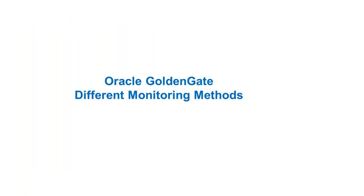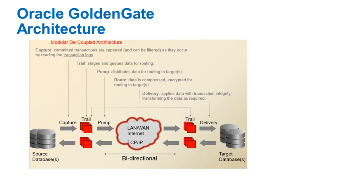Now let's discuss Oracle GoldenGate monitoring methods. Why do we need monitoring? GoldenGate replication involves three processes: Capture (Extract), Pump (Data Pump), and Delivery (Replicat). If any of these processes goes down, your GoldenGate replication stops. It's very important to monitor GoldenGate in terms of both process status and performance.